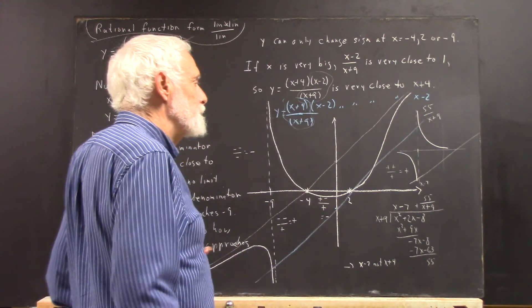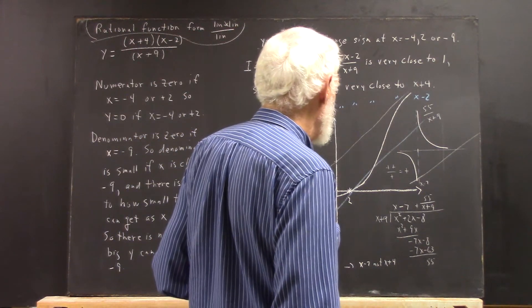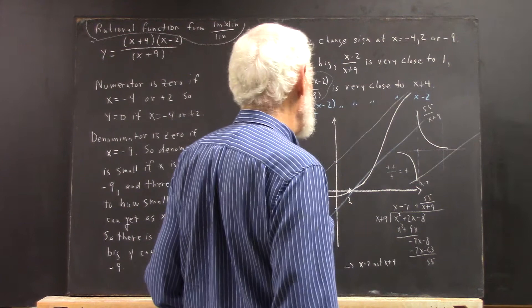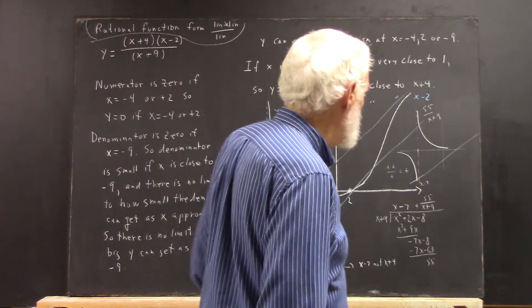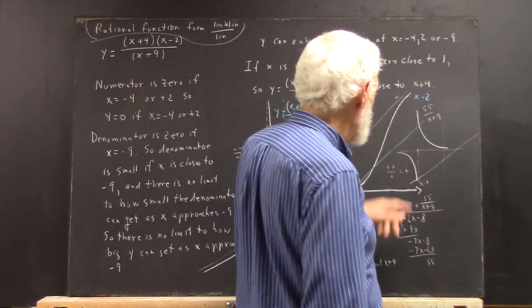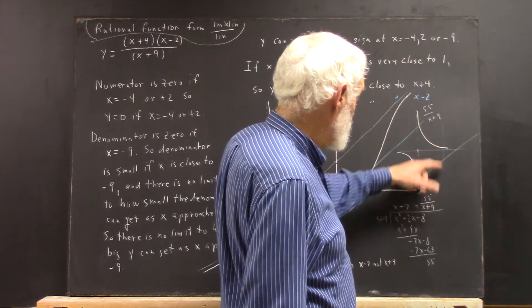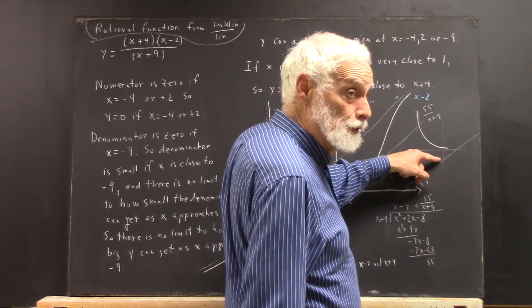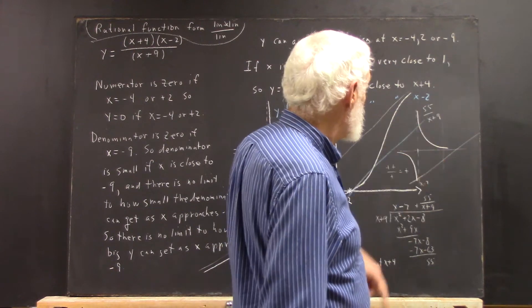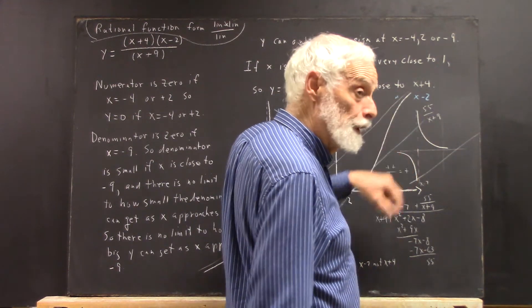And that graph will look something like this. Here's x-7. There's the graph of x-7. So let's say this is -7 on the y-axis. And here's a graph of 55/(x+9).